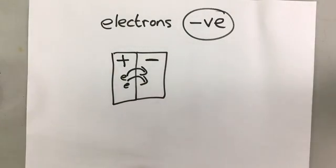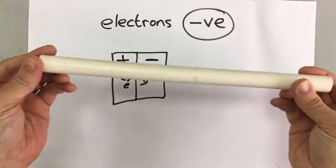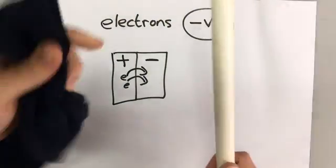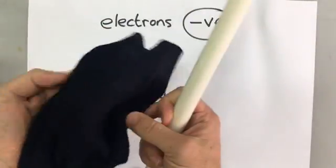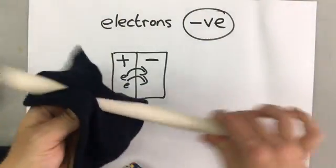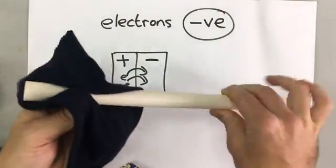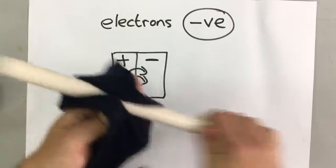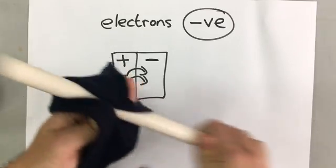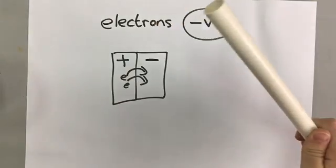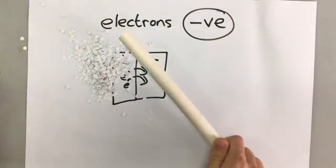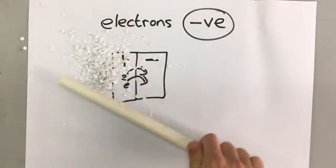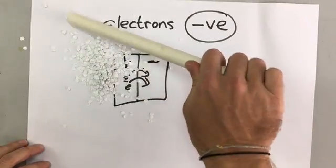We can show this if we have two insulators — this is just a piece of plastic tubing and this is just a nylon jumper. I'm going to rub the plastic tubing on the jumper, and then you can see that it attracts or repels all these bits of paper because it's got a charge.